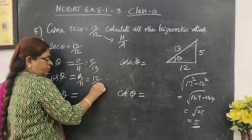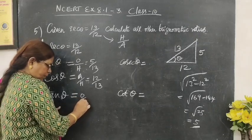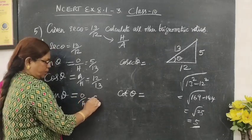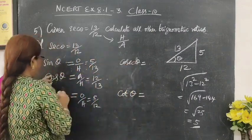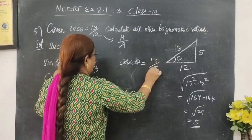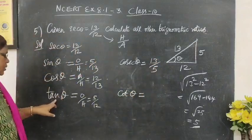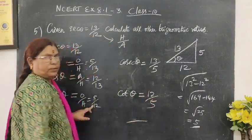Tan theta is opposite by adjacent side, opposite is 5 by 12. Then cosecant theta is reciprocal of sine theta, so 13 by 5. Then cot theta is reciprocal of tan theta, so 12 by 5. That's all.